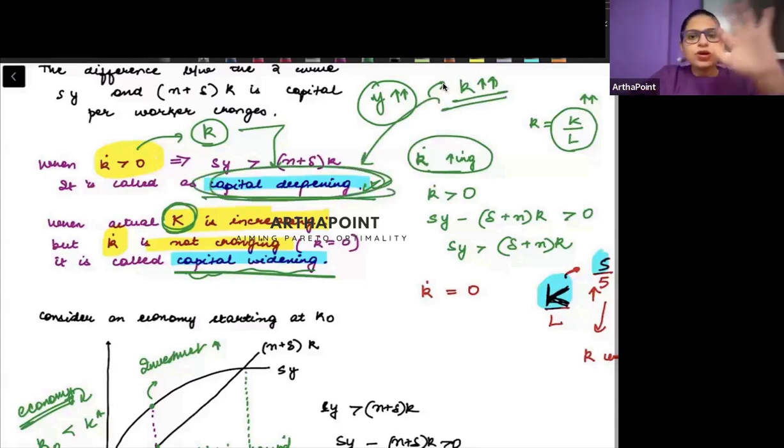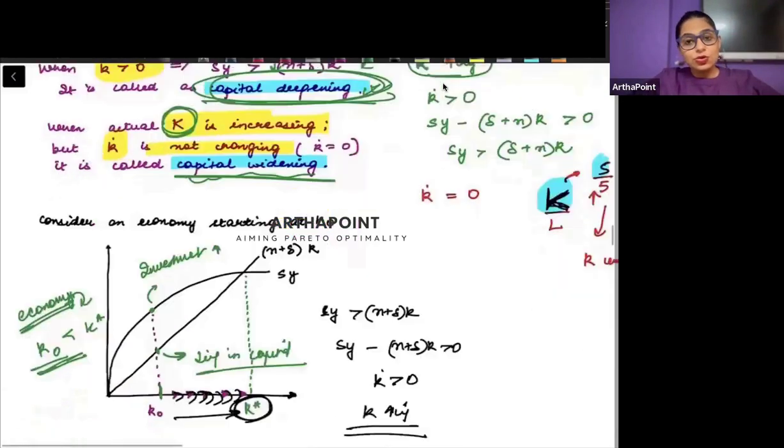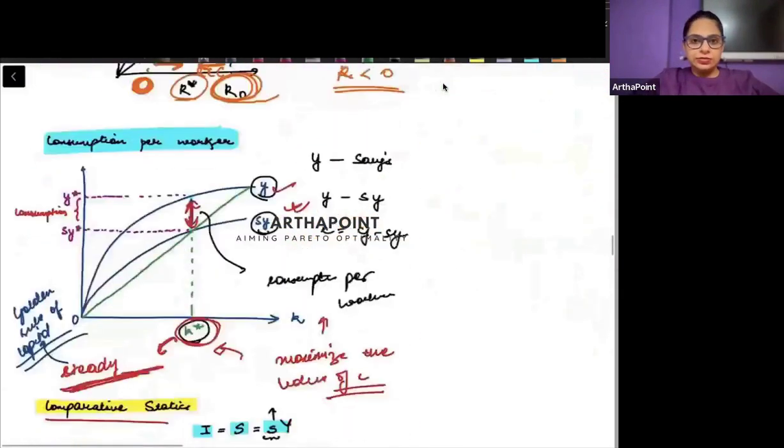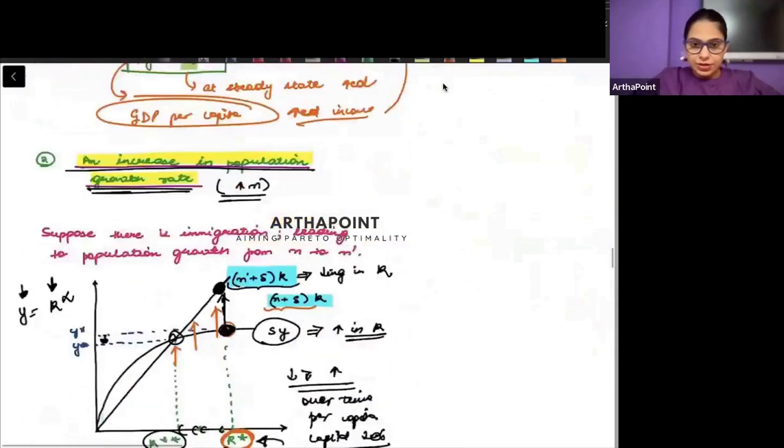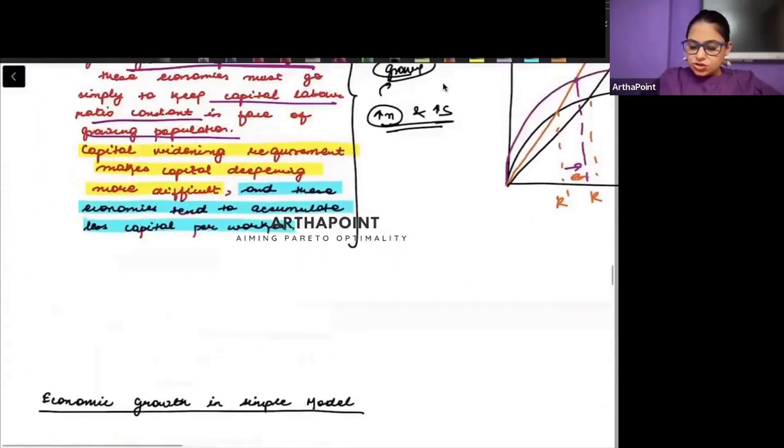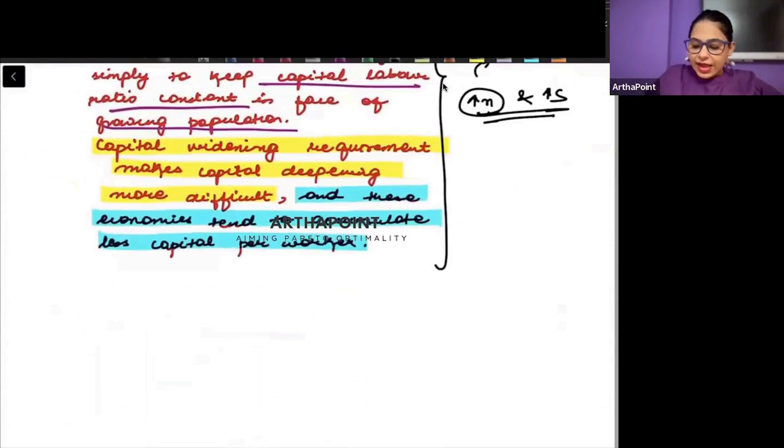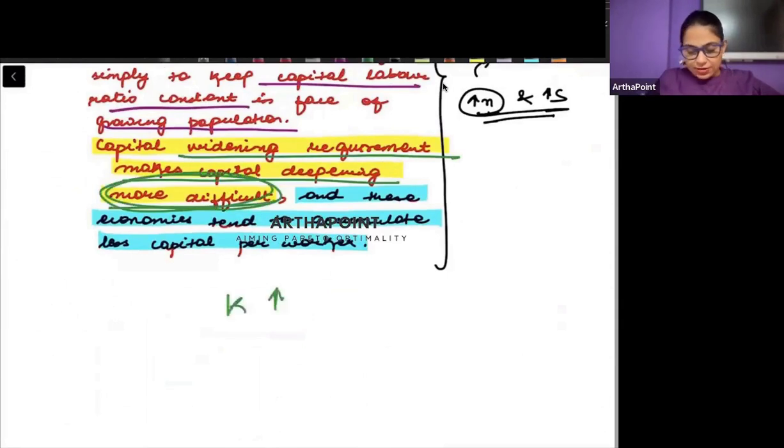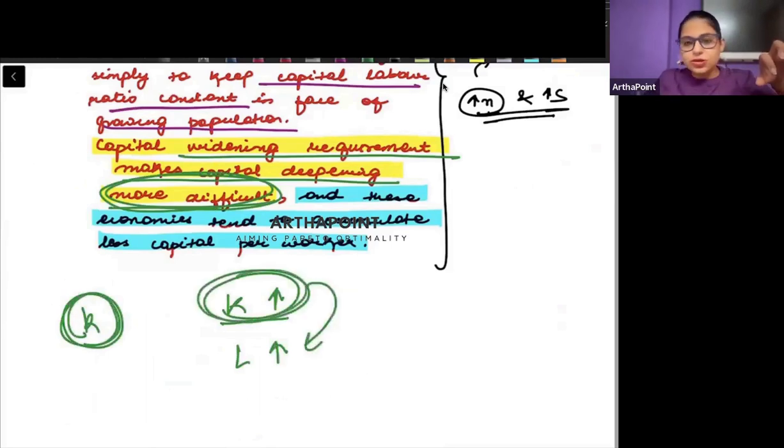But capital deepening is not happening here. The maximum that countries are able to do is capital widening, not capital deepening. The capital widening requirement makes deepening more difficult. I am able to increase K because my labor is increasing, but I am not able to increase small k because I am just trying to complement one for the other.